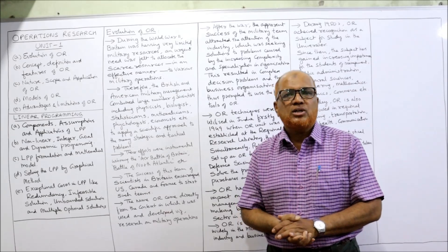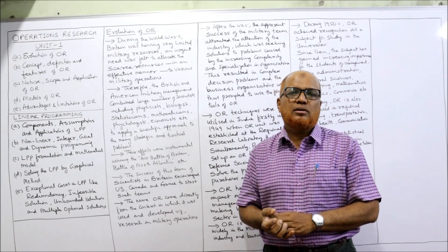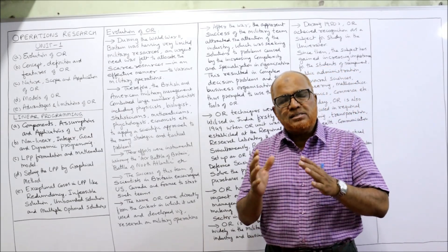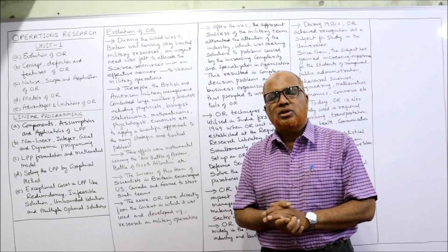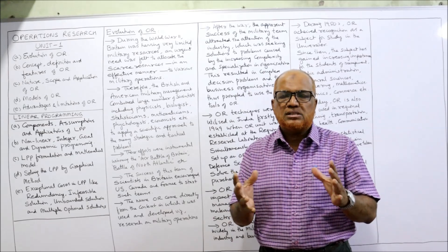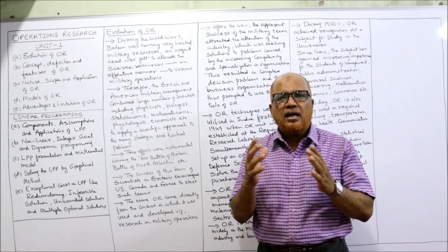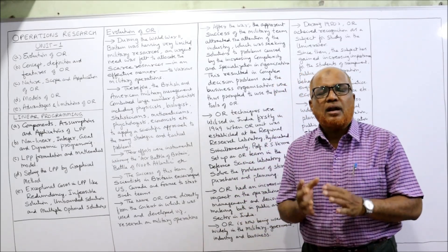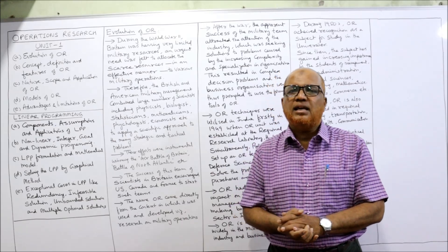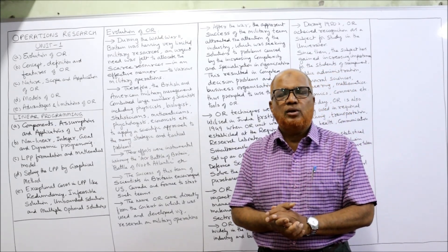Unit number two consists of allocation models. I am going to explain the simplex method of solving the linear programming problem, covering maximization problems, minimization problems, and duality problems. Unit number three again covers allocation problems: transportation problem, traveling salesman problem, and assignment problem.